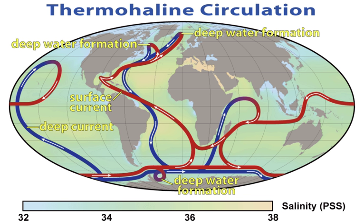On her journey circumnavigating the globe, 492 deep-sea soundings, 133 bottom dredges, 151 open-water trawls and 263 serial water temperature observations were taken. Around 4,700 new species of marine life were discovered. The result was the report of the scientific results of the exploring voyage of HMS Challenger during the years 1873–76. Murray, who supervised the publication, described the report as "the greatest advance in the knowledge of our planet since the celebrated discoveries of the 15th and 16th centuries."